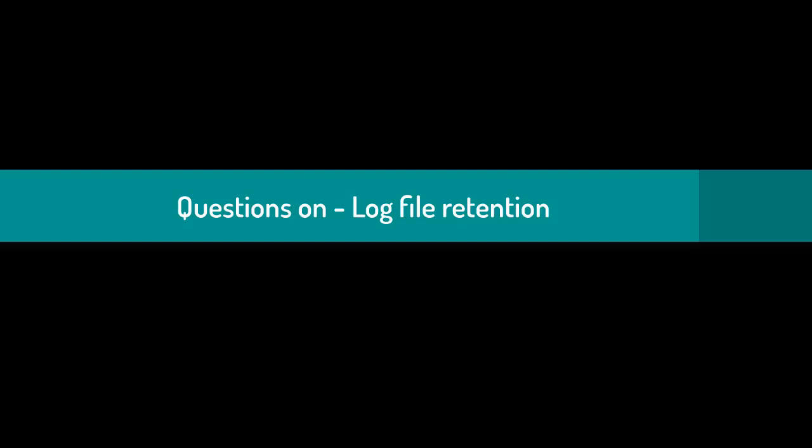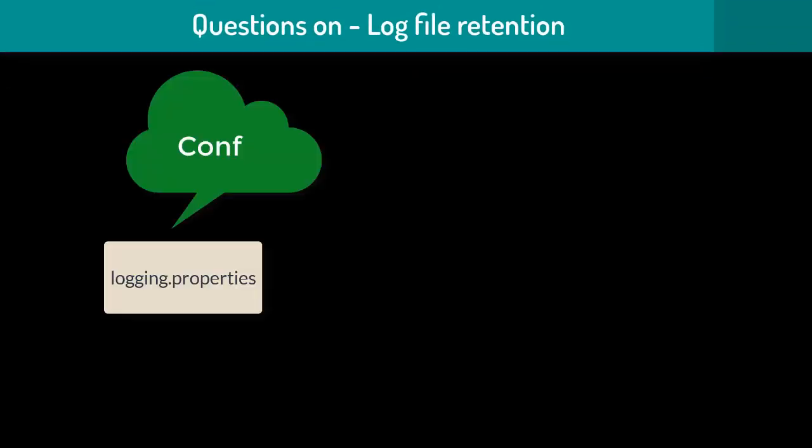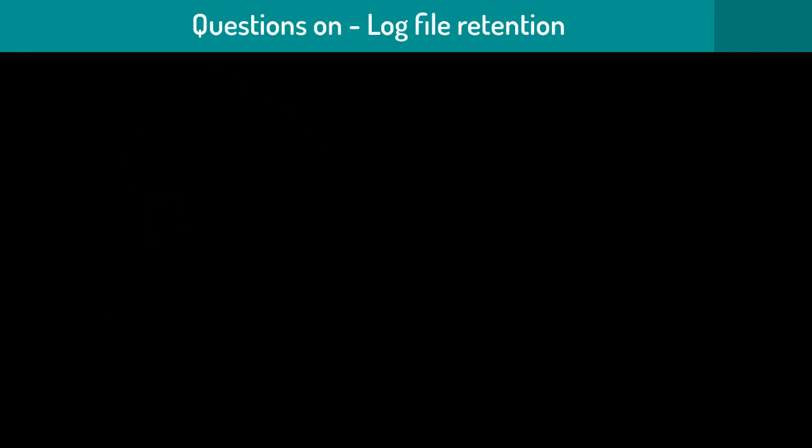How would you configure a log file retention policy? The retention of log files can be configured from the logging.properties file, which resides under the conf directory of Tomcat. By default, it keeps log files for 90 days, and a new file is created for each date. This default behavior can be changed from the logging.properties file.